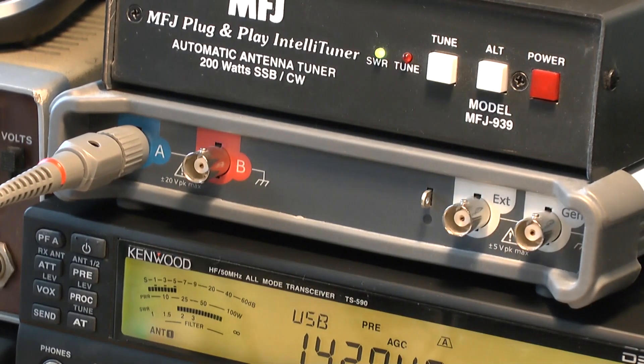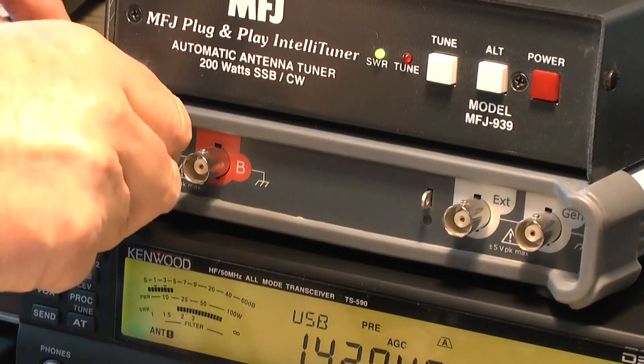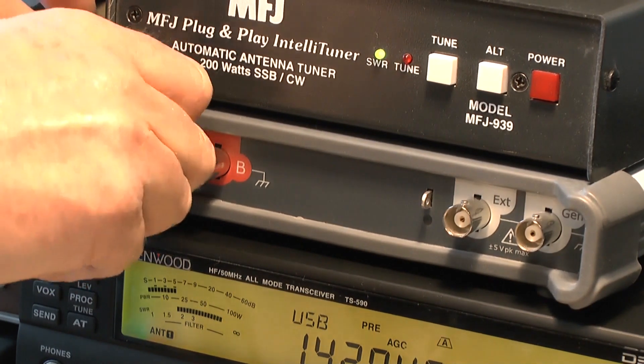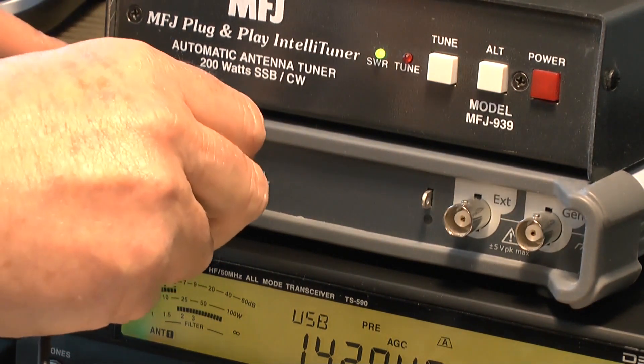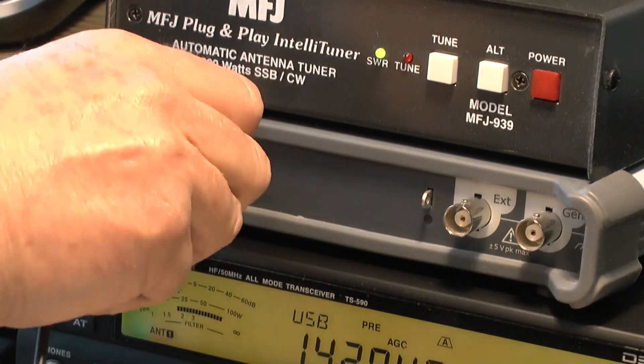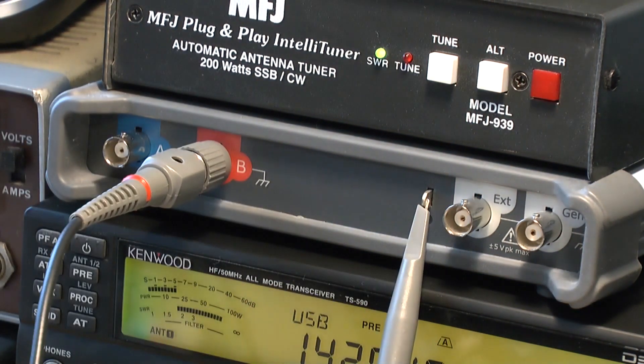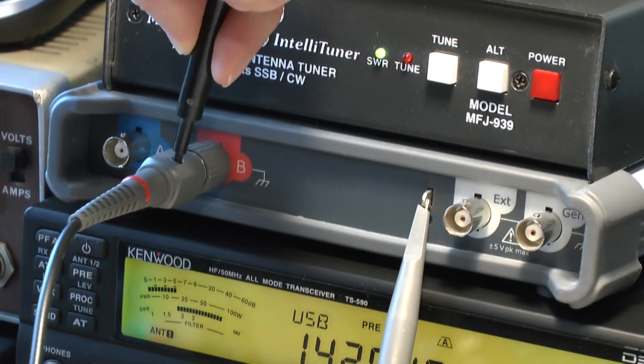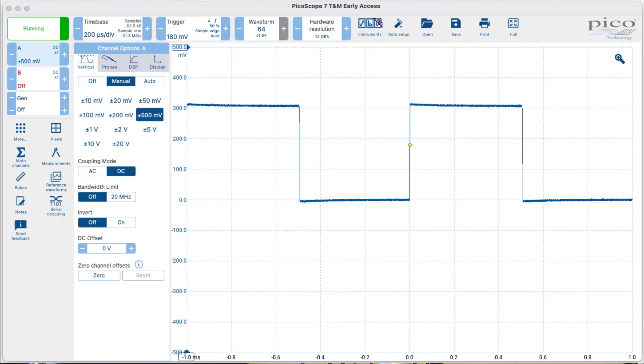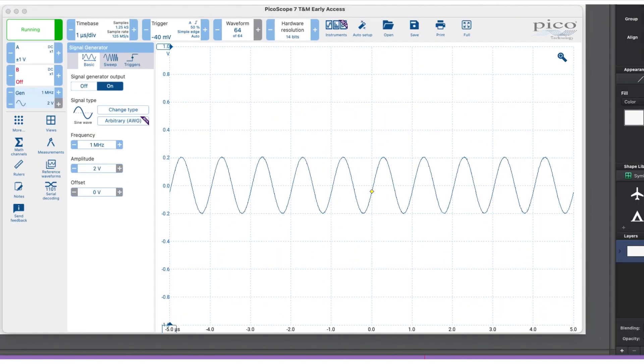It's worth remembering that the probe compensation needs to be readjusted if the probe is used on a different input, even on the same scope. This is because the values of capacitance on different inputs will vary slightly and therefore a new adjustment is needed each time. In fact, it's worth getting into the habit of compensating a probe each time it's used because it may have been used on a different input or a different scope.